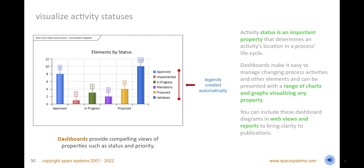Visualize requirement statuses, other properties, and metadata in compelling charts and graphs viewable on dashboard diagrams. Use the diagrams to drive repository administration and modeling tasks, and include them in reports and publications. You can also set display options including legends and colors to make the charts more appealing and meaningful.